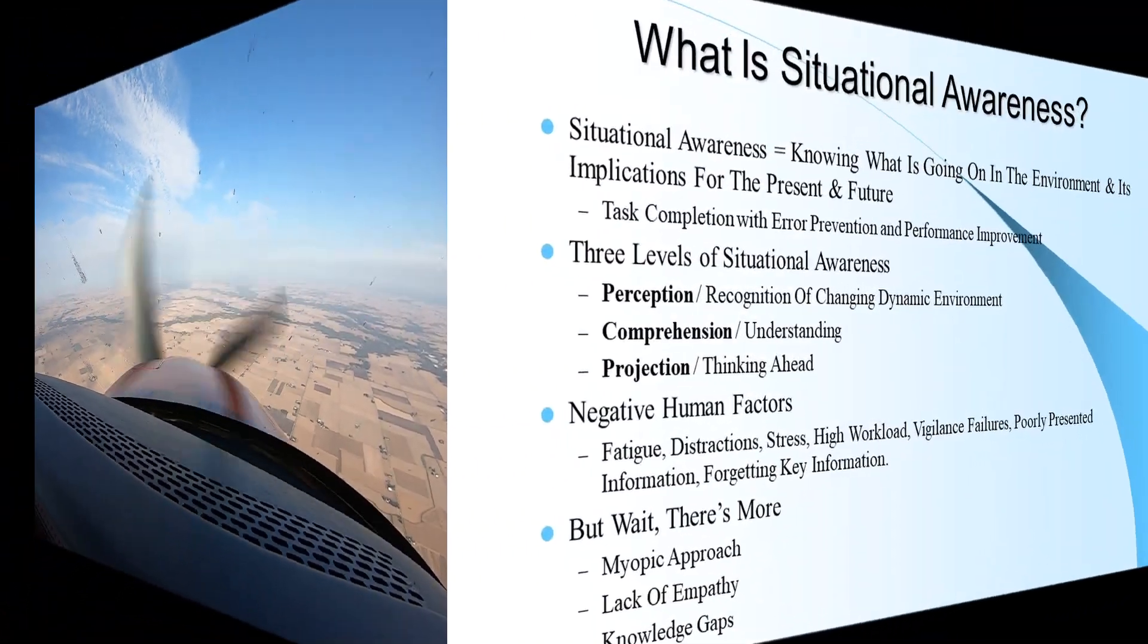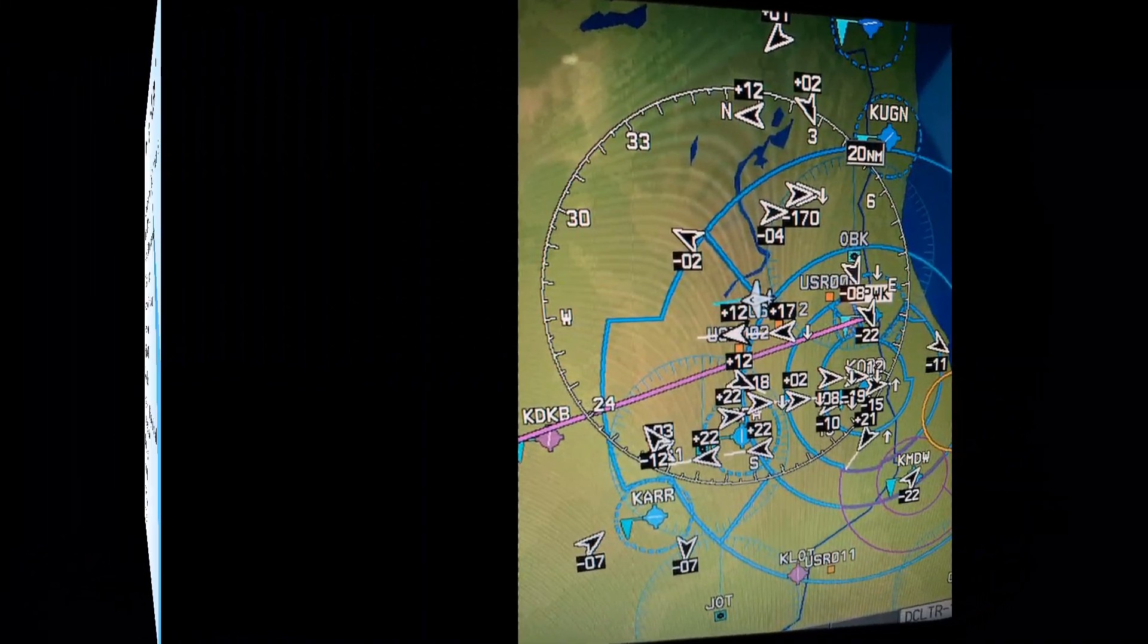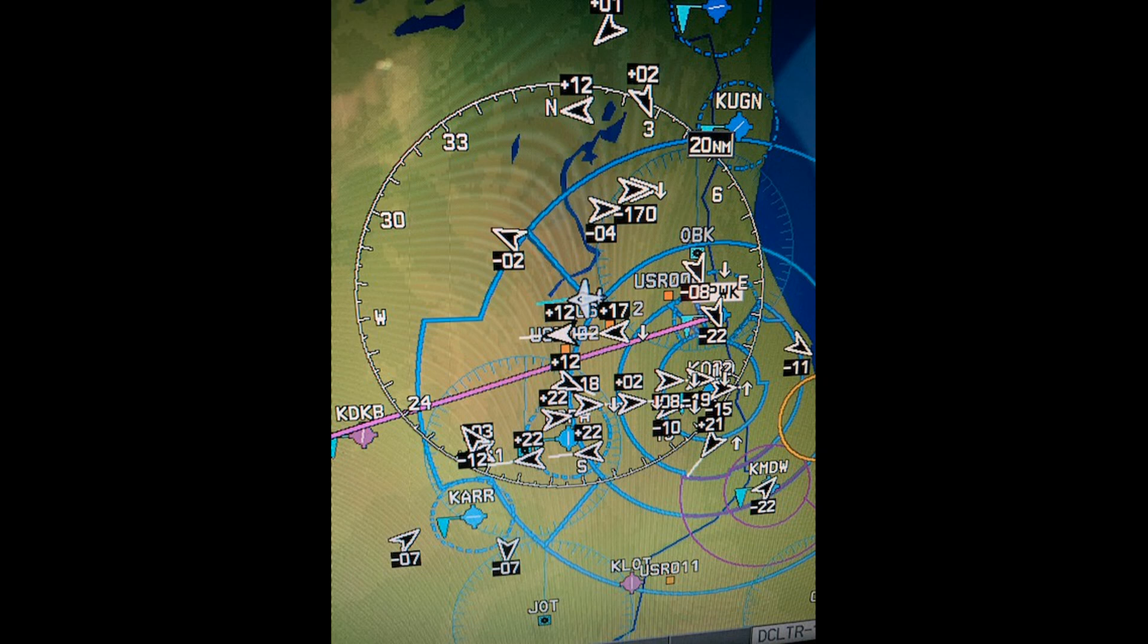So, foundationally, we all know situational awareness is perceiving changes in a dynamic environment, understanding the implications of those changes, and being able to project that into the future. Simple enough, but when you put it into a busy, complex airspace, maybe like Chicago or many other areas, and you add to that moving aircraft, high speeds, towers, obstacles, terrains, airspace, all of those things that can add a level of complexity to the environment makes the difficulty level go up.